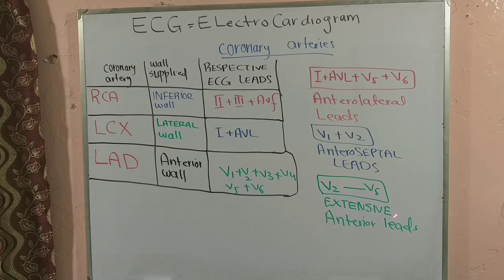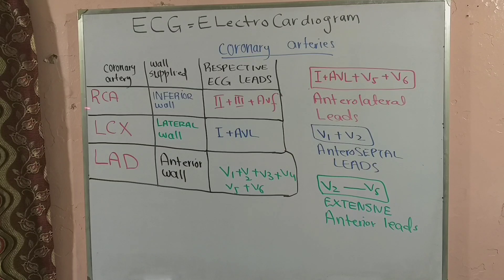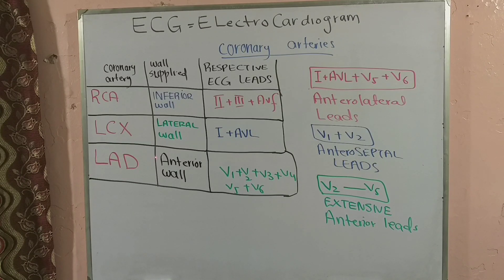Extensive anterior wall changes are represented in chest leads V1 through V5. Changes in leads I, aVL, V5, and V6 are more related to the left circumflex artery. Changes in V1 and V2 point more towards the right coronary artery, and changes in V2 through V5 favor involvement of the left anterior descending artery.